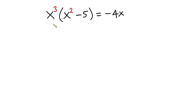Hello everyone. In this video, we have this nice exponential equation. We have x to the third power into x squared minus 5 is equal to negative 4, and we have to find all possible solutions to this problem.